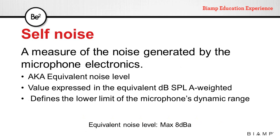Another important parameter is microphone self noise. This is a measure of the noise generated by the microphone electronics, also known as the equivalent noise level, measured in dB SPL A-weighted. It defines the lower limit of the microphone's dynamic range. For instance, a microphone may specify an equivalent noise level of maximum 8 dB(A), meaning any signal below that level will be masked by the microphone's own noise.